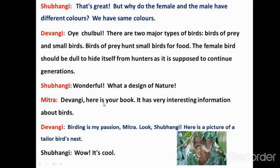Mitra says: 'Devangi, here is your book.' She brings the book Birds of India that Devangi had requested. Mitra says: 'It has very interesting information about birds.' Devangi says: 'Birding is my passion!' Then she says: 'Look Subhangi — here is a picture of a tailor bird nest in the book.'